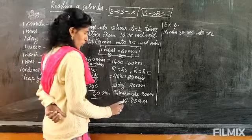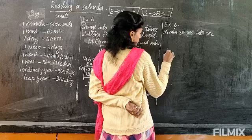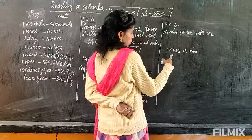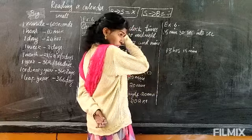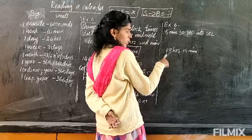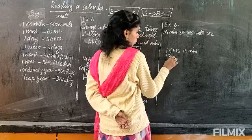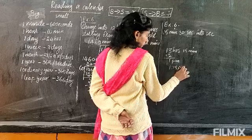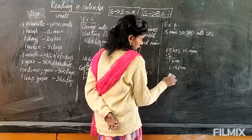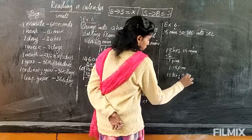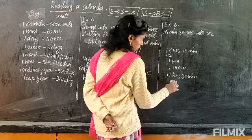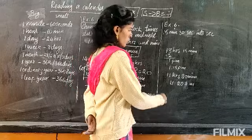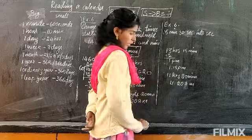Suppose you get an answer like 13 hours and 15 minutes. Since 13 is above 12, you subtract 12 — so 13 minus 12 equals 1. That becomes 1 p.m. and with 15 minutes remaining it is 1:15 p.m. Suppose instead you get 11 hours 20 minutes — since we did not subtract 12, we write it as 11:20 a.m. When you subtract 12, it becomes p.m.; when you don't subtract, it is a.m.